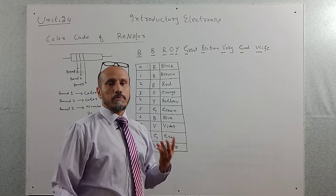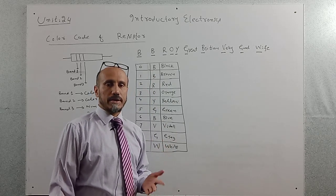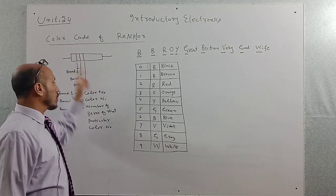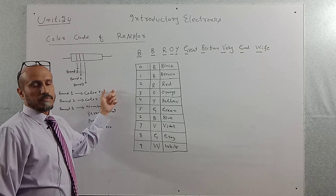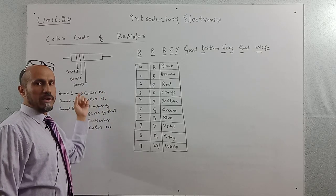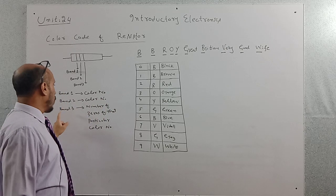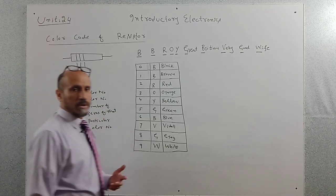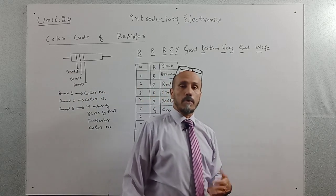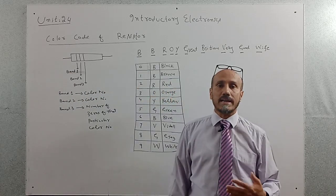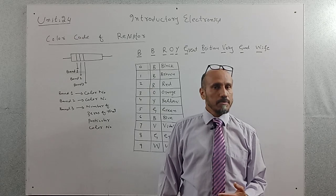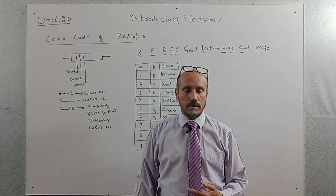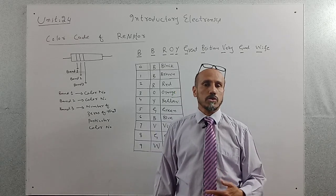We have to keep three points in mind in order to determine the resistance value. Band number one will show the color number. Band number two will also show the color number. While band number three, instead of writing the color number, we will write the number of zeros for that particular color number.